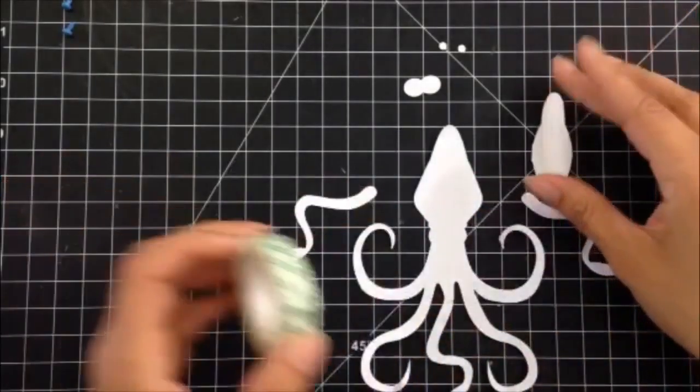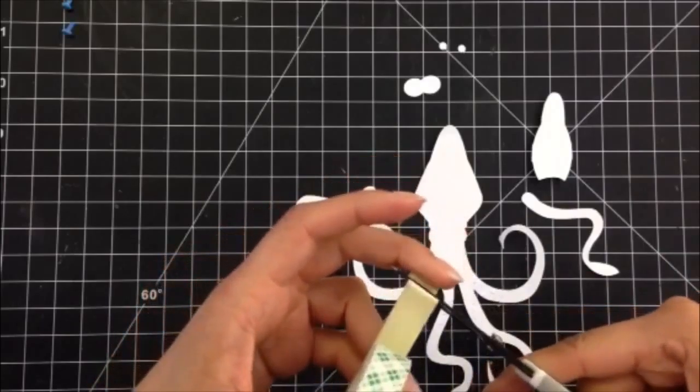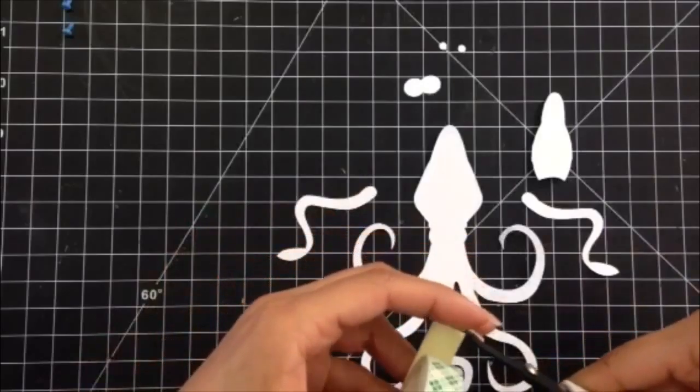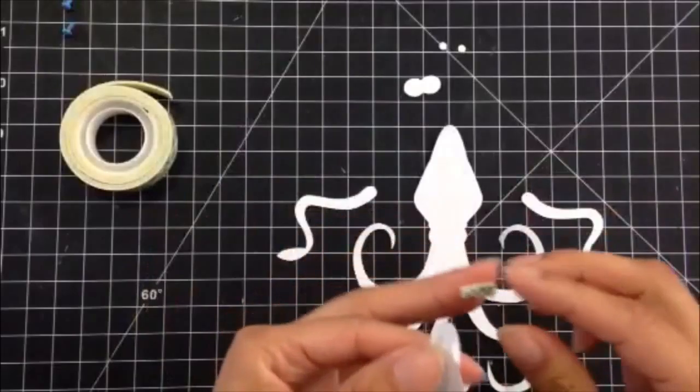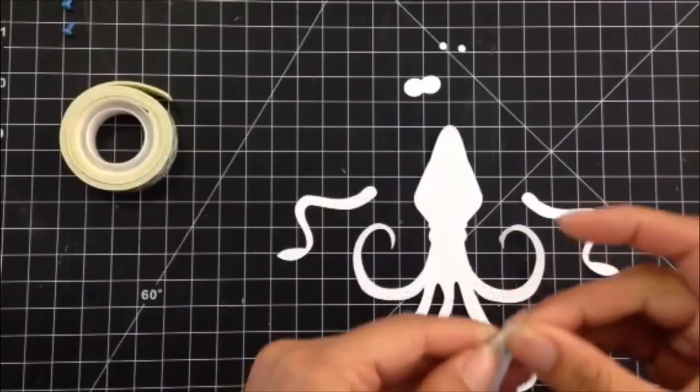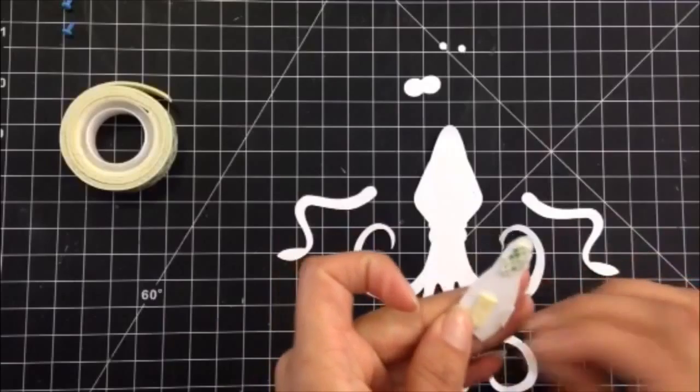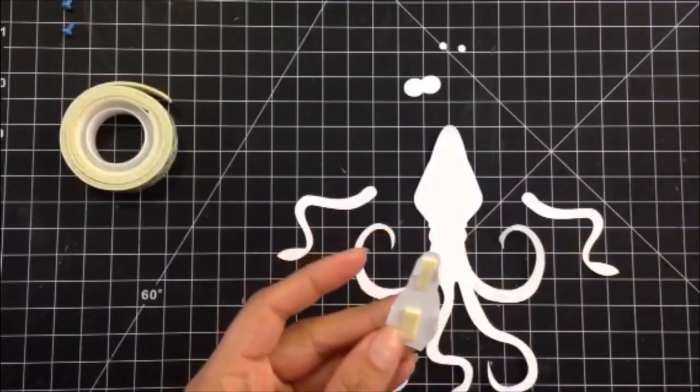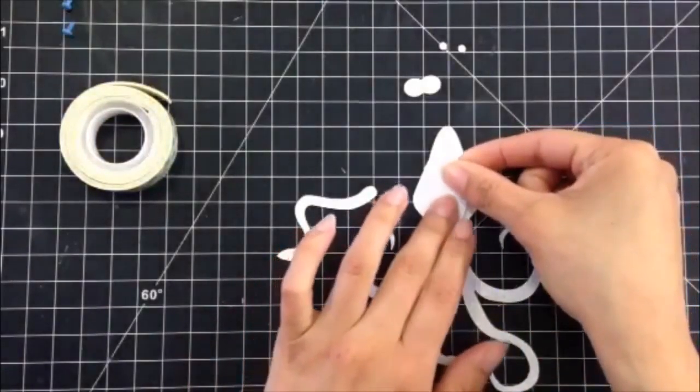You want to put a foam piece. Use two pieces of foam glue tape. Put it inside here and inside here. Just take these pieces out and just tape it right about there.